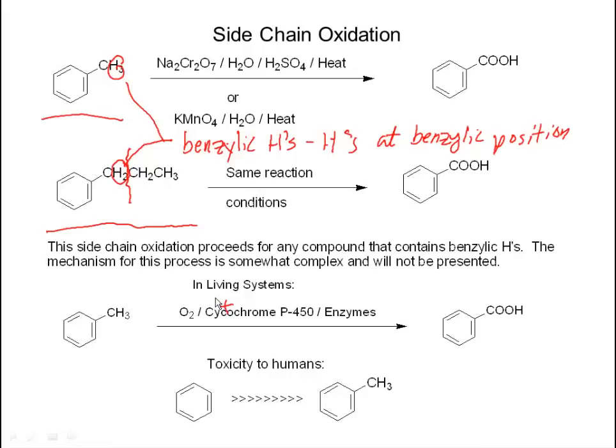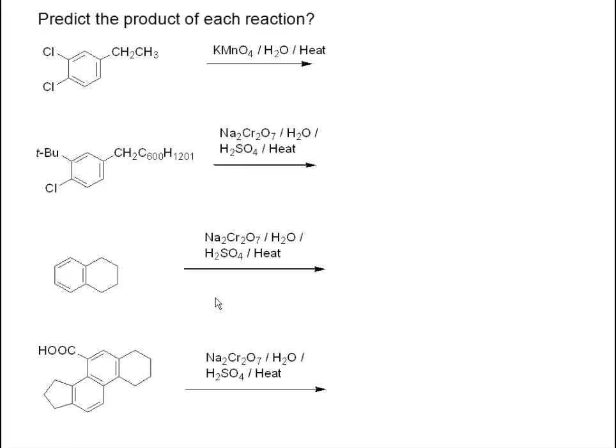Benzene is harder for your body to get rid of, and it ends up being a far more toxic compound because of that. Let's look at the reaction in some real systems. I'm asking you to do a little problem — predict the product of each reaction.